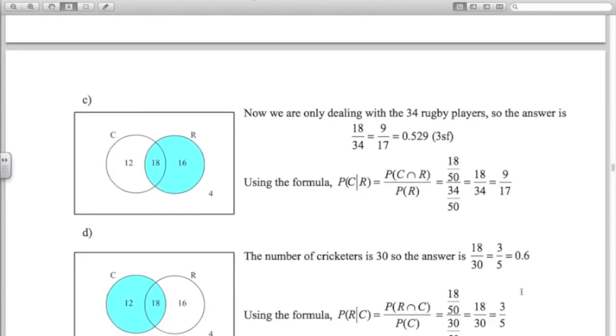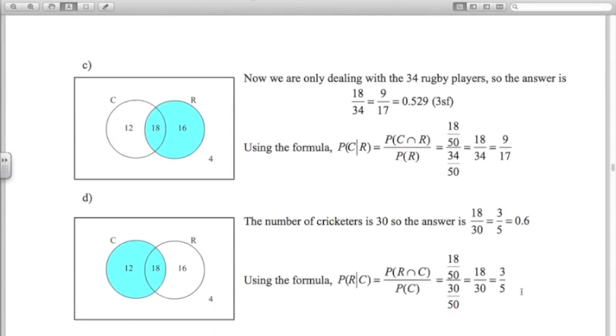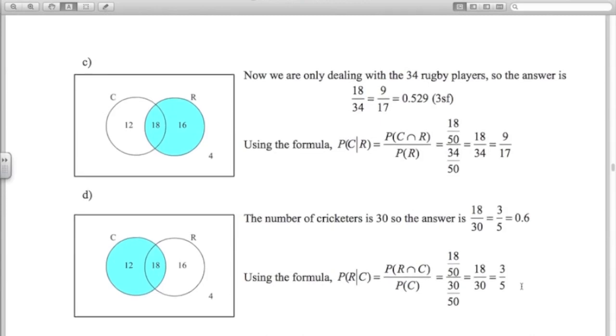For D, the question is, what's the probability that we, given that we have someone who plays cricket, what's the probability they're a rugby player? So probability of R given C. So given that we've got a cricketer, we know we've got one of these 30 people. What's the chance they play rugby? 18 out of those 30 play rugby also. So 18 out of 30. That's one way of looking at it. If you use the formula, you see you get the exact same answer.